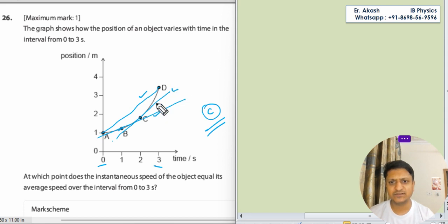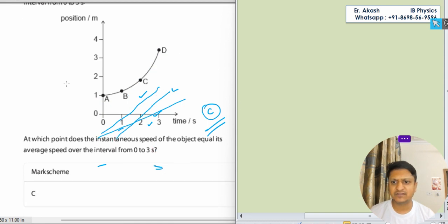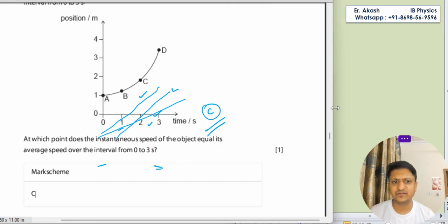Because the instantaneous velocity at C is equal to the average velocity from 0 to 3 seconds. So we will check the mark scheme. Mark scheme is C. C option is right.